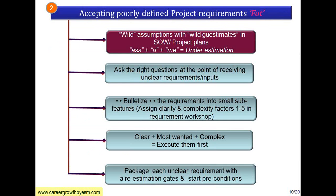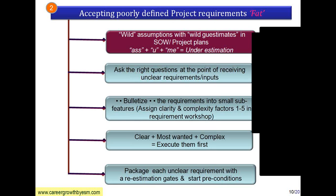When someone gives you a one-line requirement, make a set of questions and ask the right questions at the point of receiving unclear requirements — not afterwards, not after starting the project. You will get answers; then write the requirement yourself and send it back to the customer for approval. Another option is to bulletize the requirements into small sub-features, and for each sub-feature assign clarity and complexity factors.